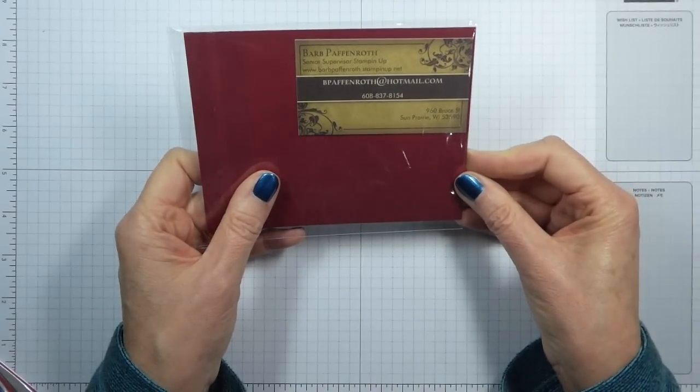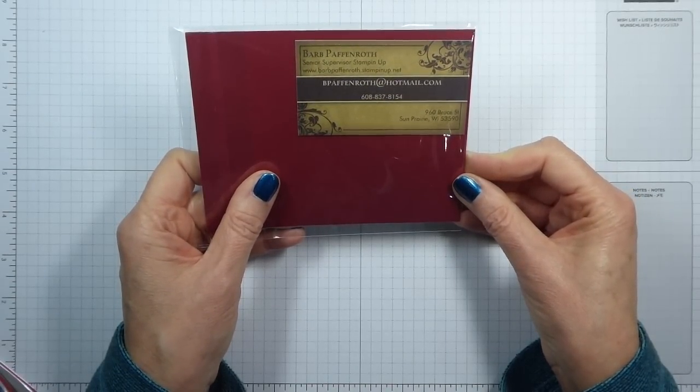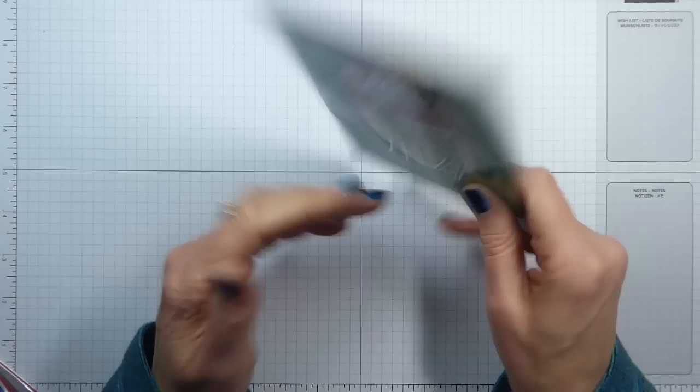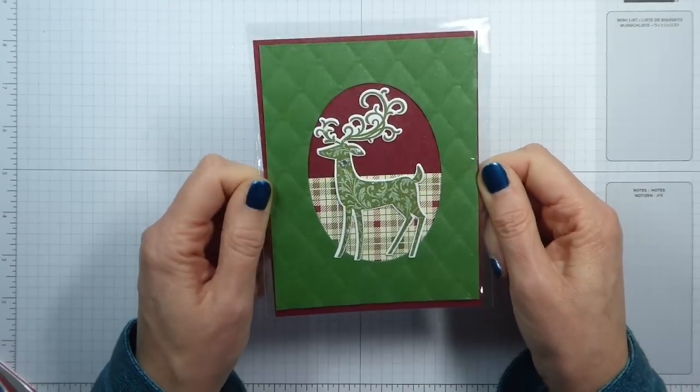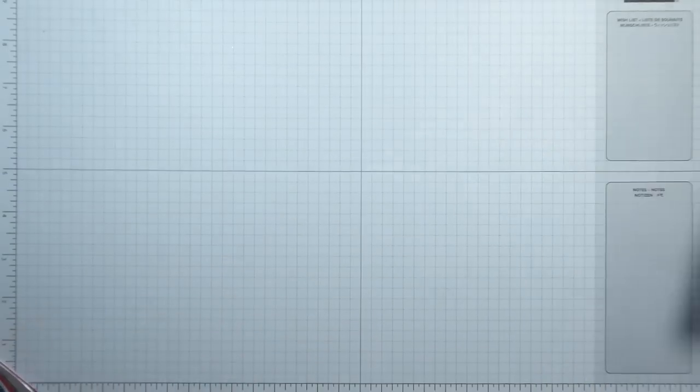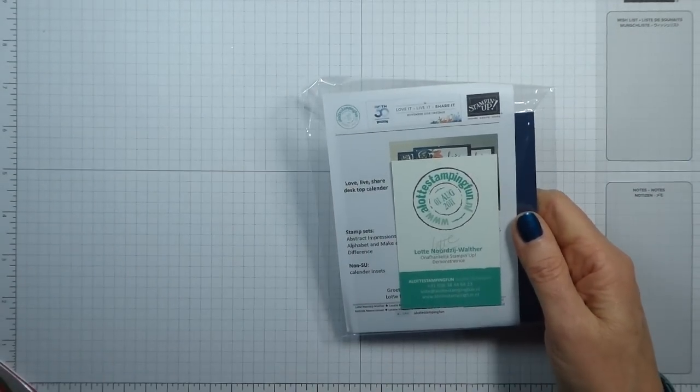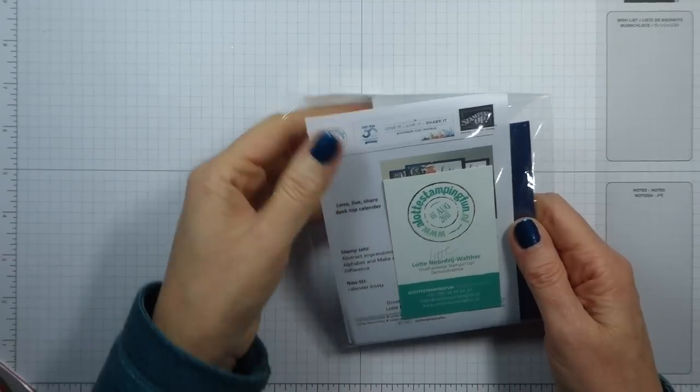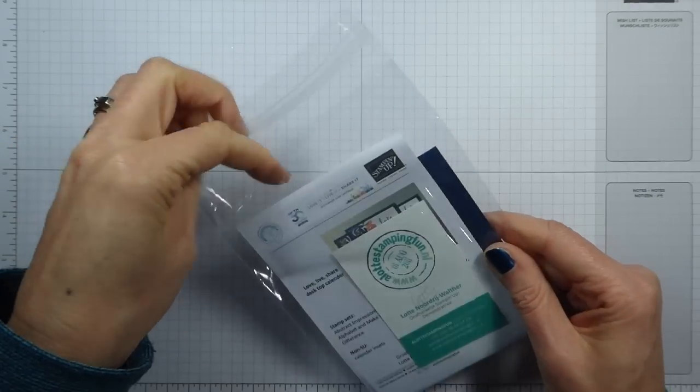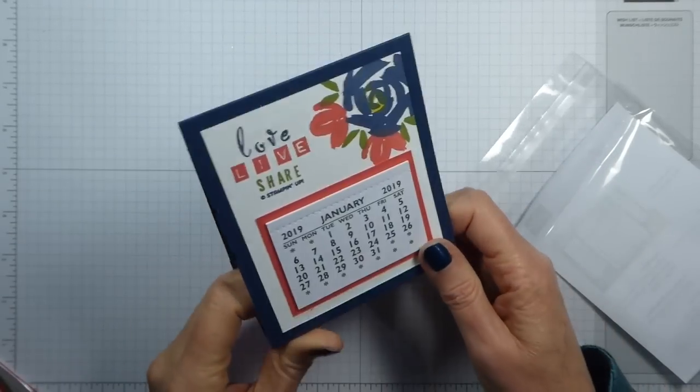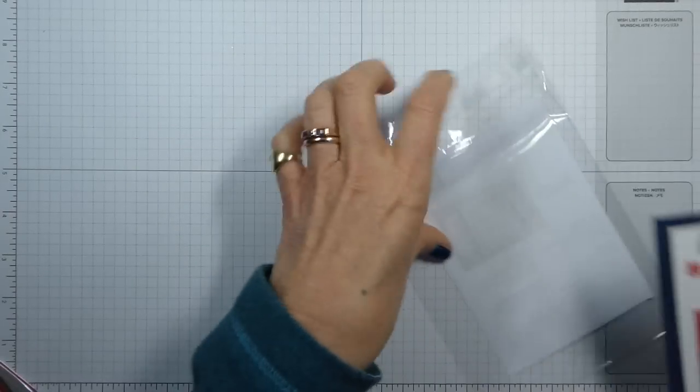This is from Barb Paffenroth who is from Wisconsin, some prairie. Again shimmer mist or shimmer paint misted on. Very pretty. This is from Lottie, oh Lottie I'm sorry, I'm not even going to attempt that. But one of our Dutch team members. It's a desk diary and it's lovely. That will be sitting on my desk so I'll know what date it is, even if I don't know what time it is because my clock has stopped. That was a bit random.